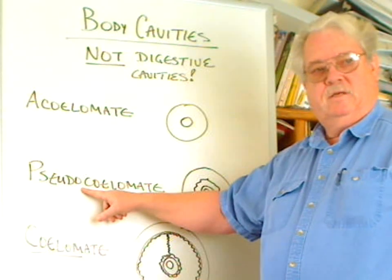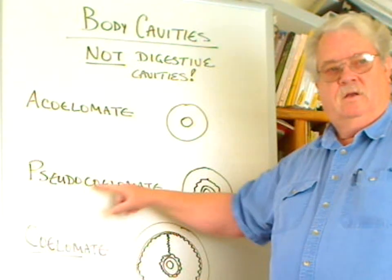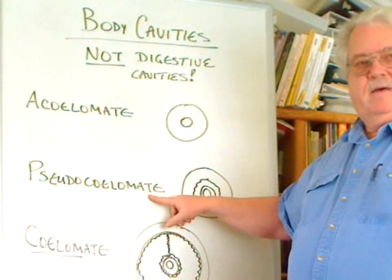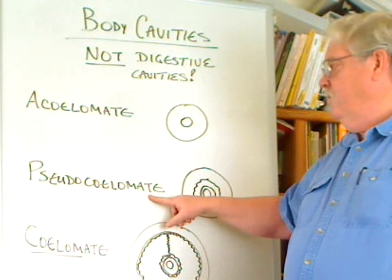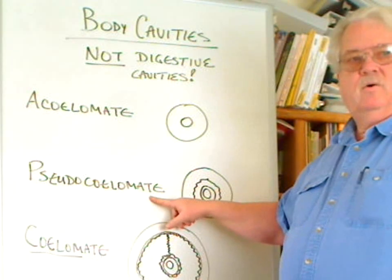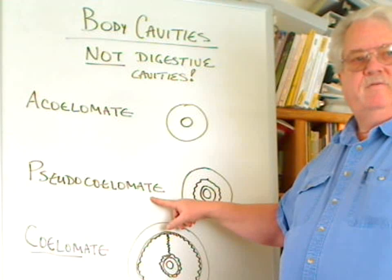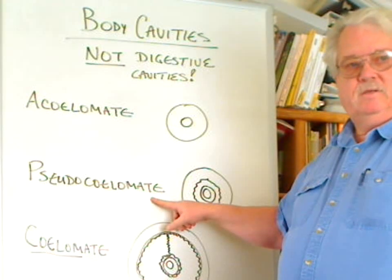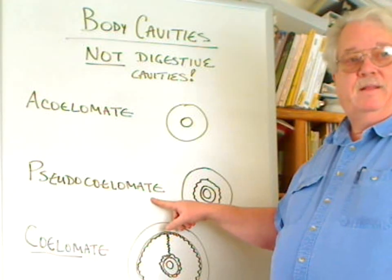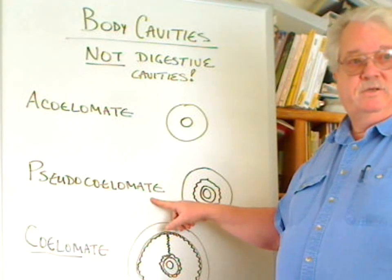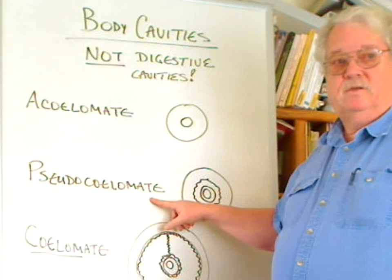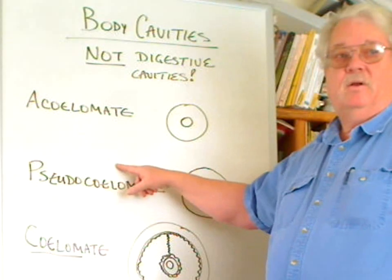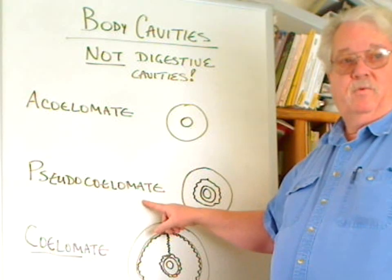'Pseudo' means false, and 'coelomate' means bearer of a body cavity. So these organisms have false body cavities. There's only one phylum like this in the list for this course, and that's the nematoda, or the roundworms.